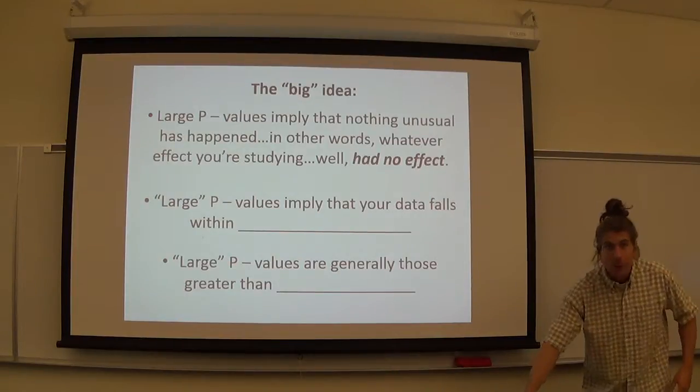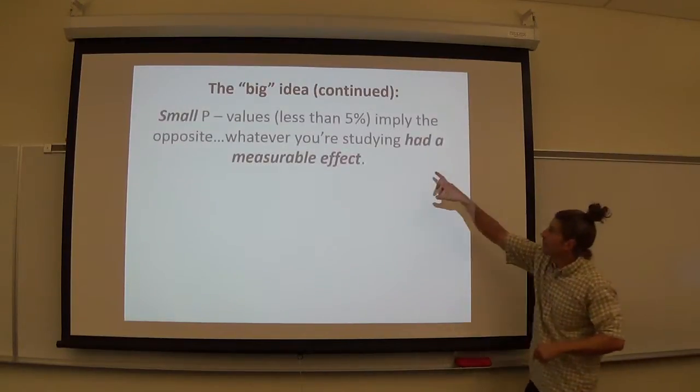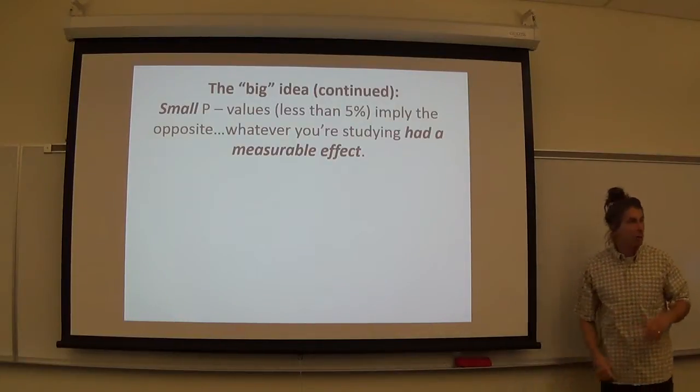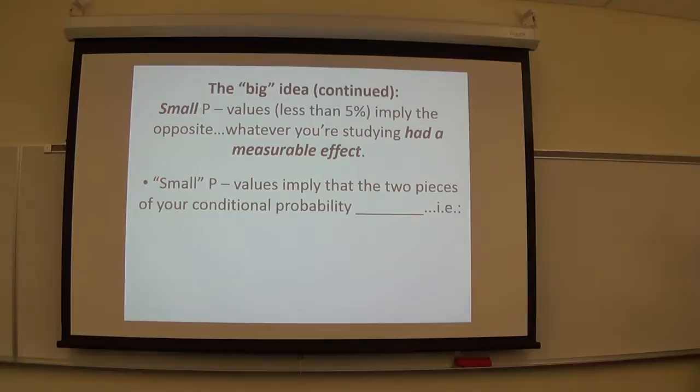Cool so far? Those are big P values, generally big P values are not the ones you read about in the papers though. Small ones are the ones you read about in the papers, so small ones. Less than 5% is generally the cutoff, although we'll see why sometimes it's not always less than 5%.